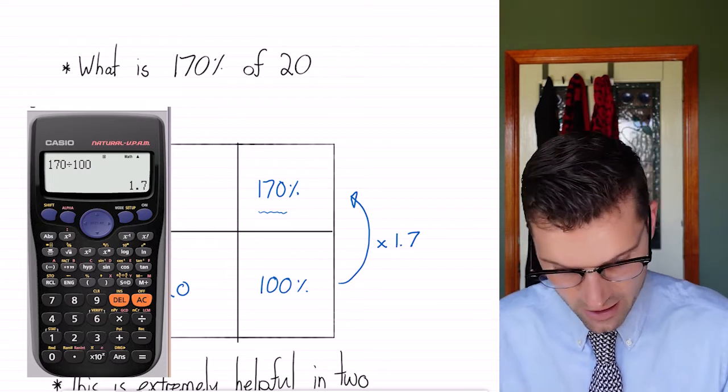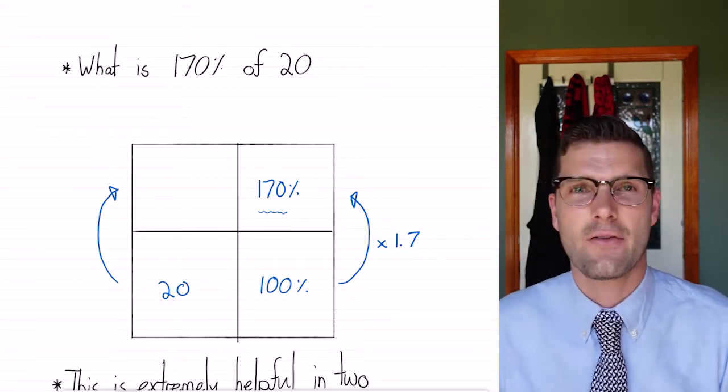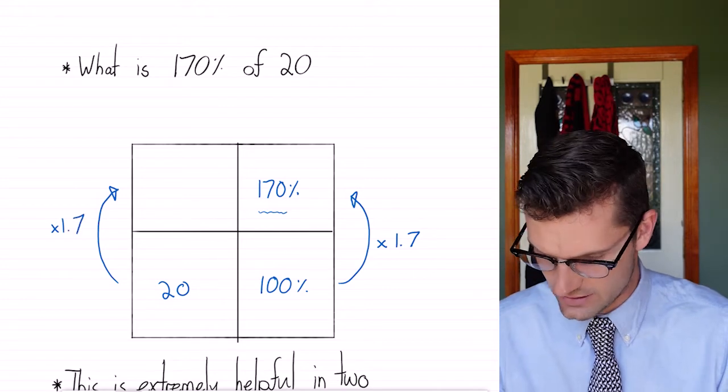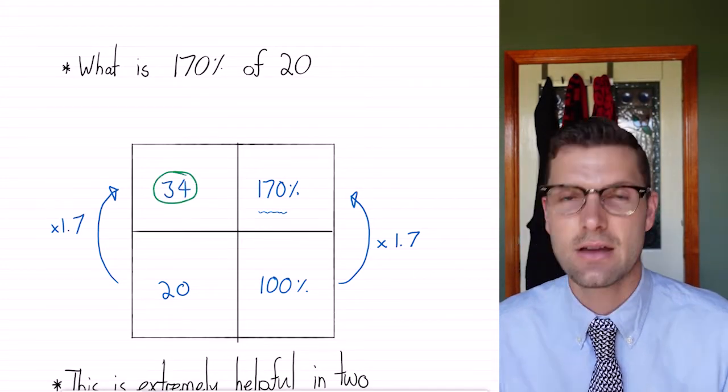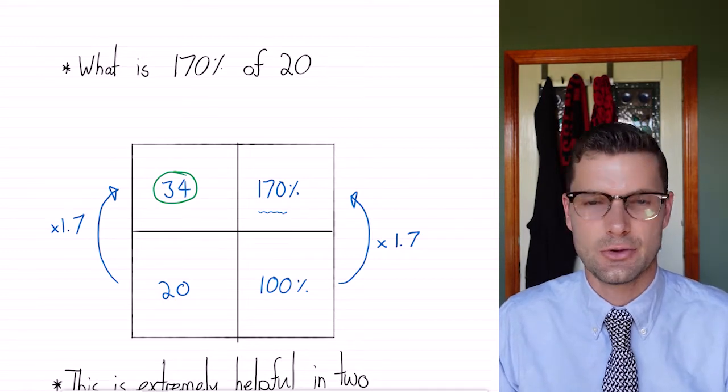Because I've done that on one side, I have to do it on the other side. I've got to times 20 by 1.7, which is equal to 34. And that is my answer. And that's all the working you need to do.